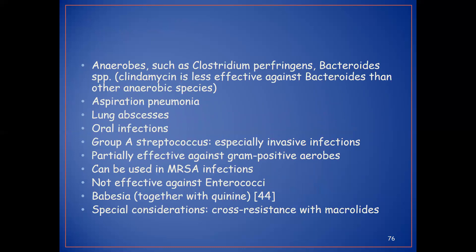Clindamycin is used against anaerobes such as Clostridium perfringens and Bacteroides species, though it is less effective against Bacteroides than other anaerobic species. It can be used for aspiration pneumonia, lung abscesses, oral infections, Group A Streptococcus infections, and invasive infections. It is partially effective against gram-positive aerobes, can be used in MRSA infections, but is not effective against enterococci. It can also be used in the treatment of Babesia together with quinine.